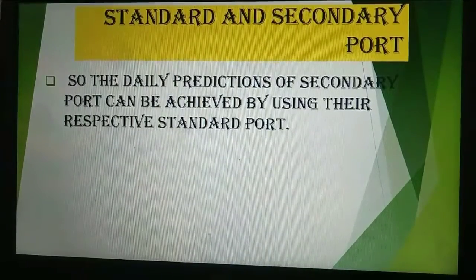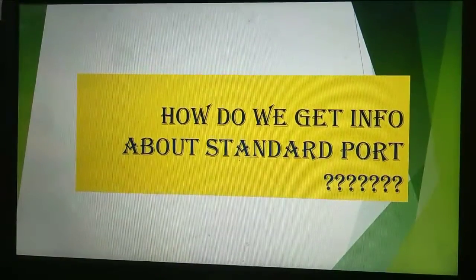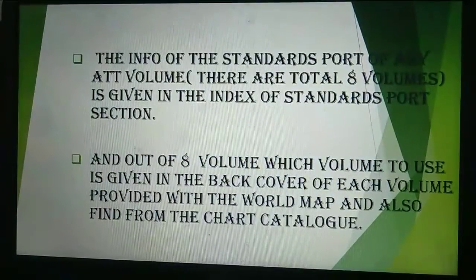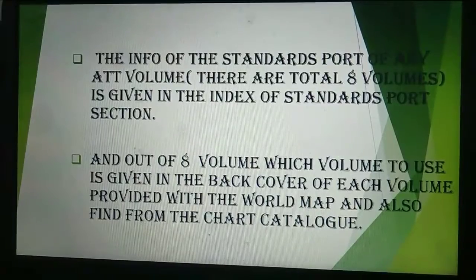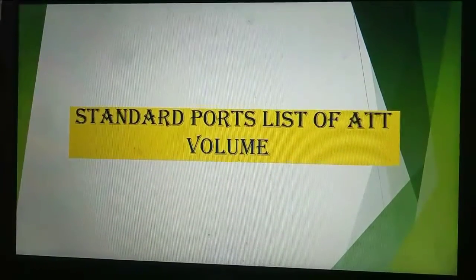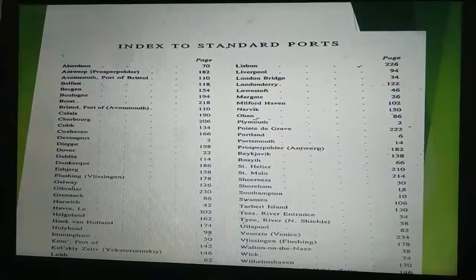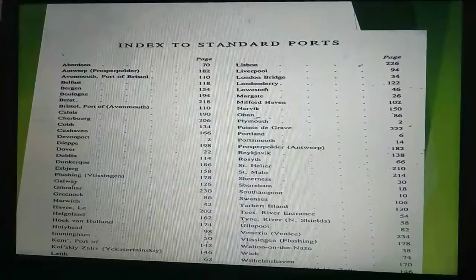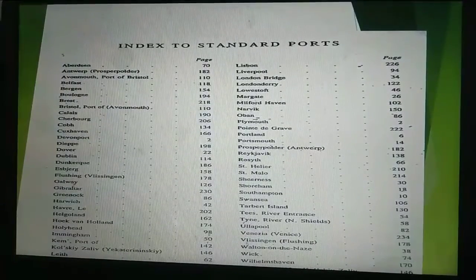The daily predictions of a secondary port can be achieved by using their respective standard port. The info of the standard ports of any Admiralty Tide Table volume — there are a total of 8 volumes — is given in the index of standard ports section. Which volume to use is given in the back cover of each volume, provided with the world map, and can also be found in the chart catalogue. As you can see here, this is the index to standard ports. This page is given at the starting of every tide table, and these are the pages where the daily predictions of tides are given.